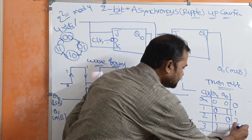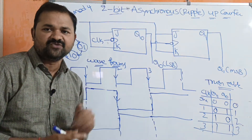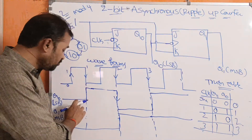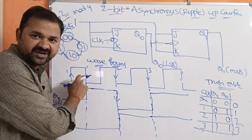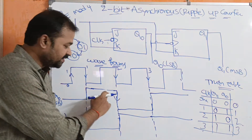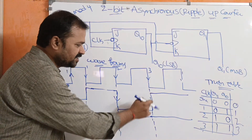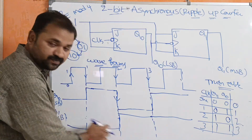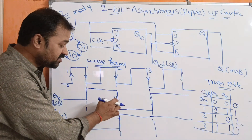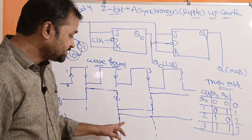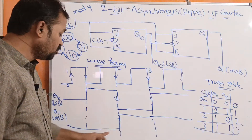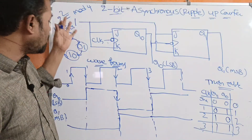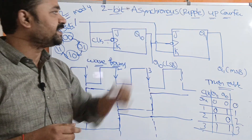If you observe the waveforms, Q0 toggles at the negative edge of every clock pulse — bottom, top, bottom, top. Q1 remains 0 for the first two clock pulses and then becomes 1 for the next two. This is about the circuit for the 2-bit asynchronous ripple up counter (mod-4 counter), including its waveforms and truth table.